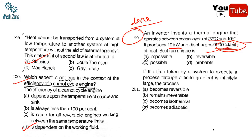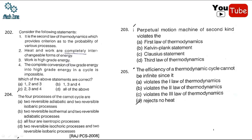Question 201: if the time taken by a system to execute a process through a finite gradient is infinitely large, the process is extremely slow. If a process is very slow, then it is definitely an isothermal process.